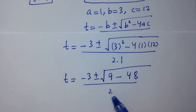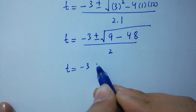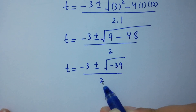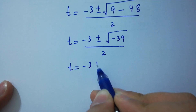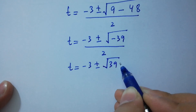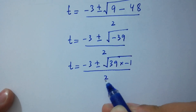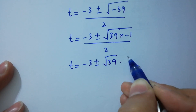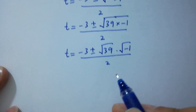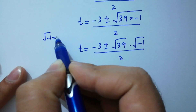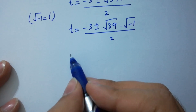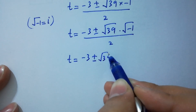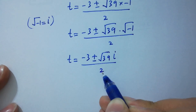t equals minus 3 plus or minus square root of minus 39, over 2. We can write this as t equals minus 3 plus or minus square root of 39 times square root of minus 1, over 2. Since square root of minus 1 equals i from complex numbers, t equals minus 3 plus or minus square root of 39 times i, over 2.